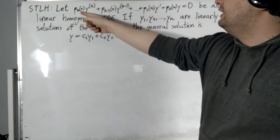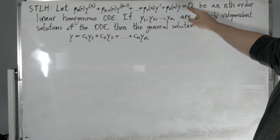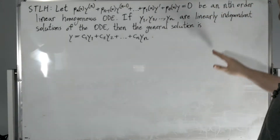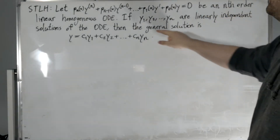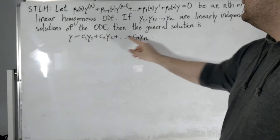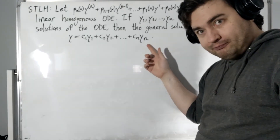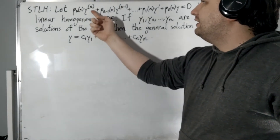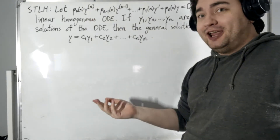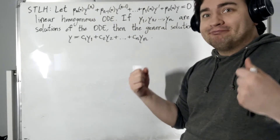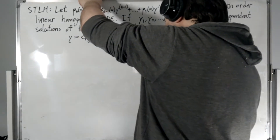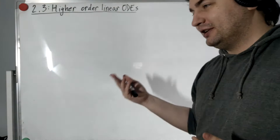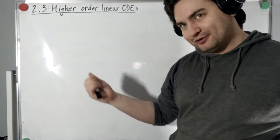This theorem says that if you have a linear homogeneous ODE that's nth order and you have n many linearly independent solutions, then the general solution is just all the linear combinations of those. In the past we always had order two. Today it's going to be more than two. The procedure is the same: find the characteristic equation, construct n many linearly independent solutions, and then the general solution is all the linear combinations of those.